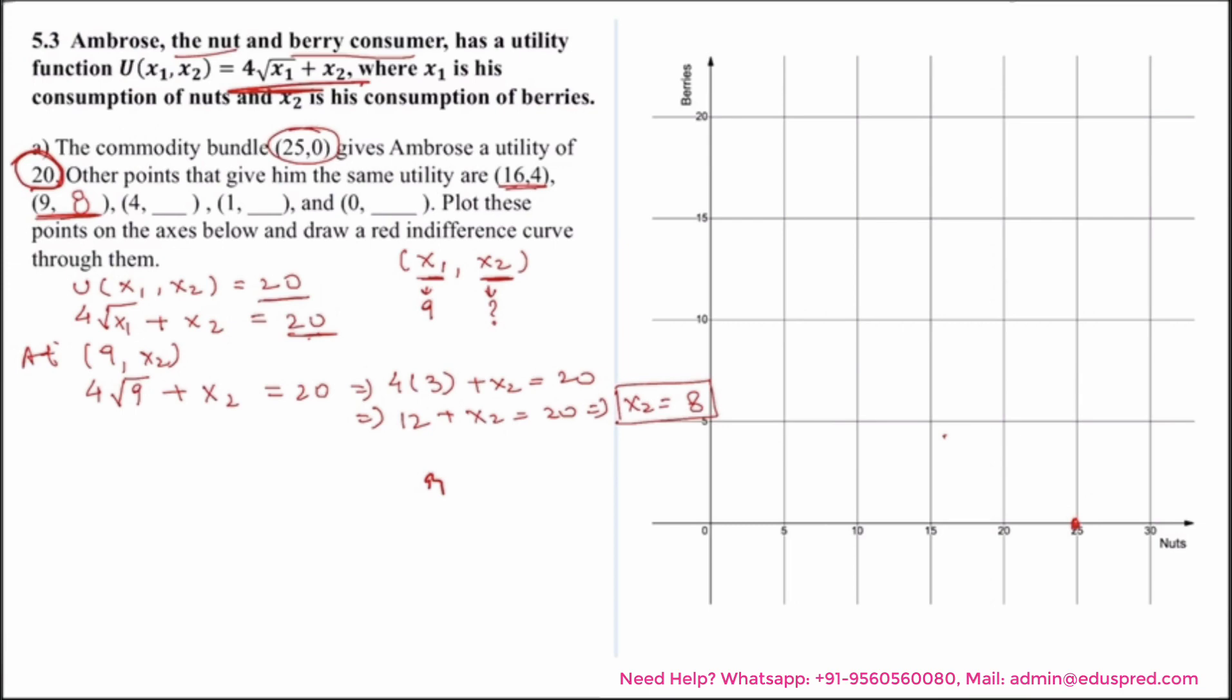So where x1 is taking the value of 4, 1, and 0 respectively at different points. Let's quickly calculate the value of x2 at these points as well. Now we have at (4, x2), I would be having the function as 4 multiplied by square root of 4, as x1 is taking the value of 4 now. x2 remains as it is as we have to calculate its value, and the utility that Ambrose is getting from here is 20.